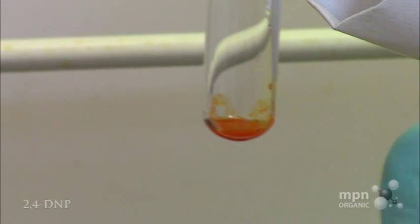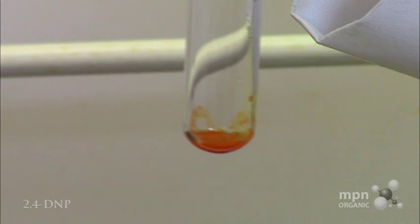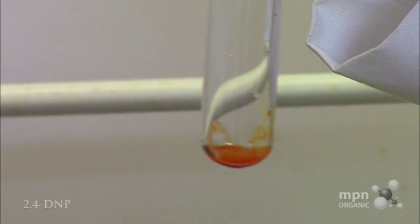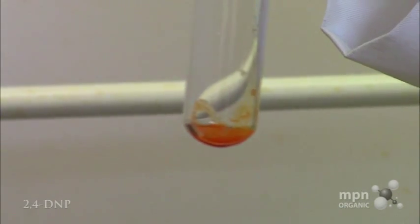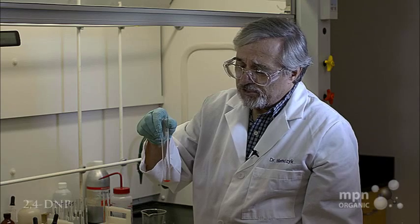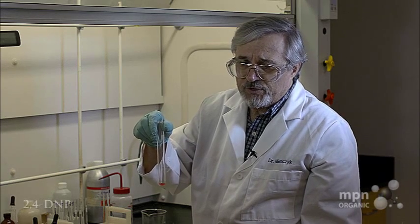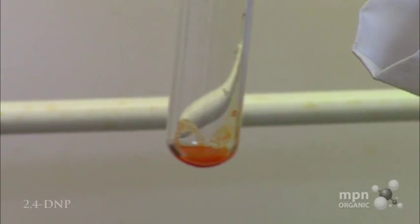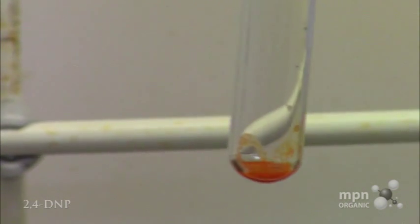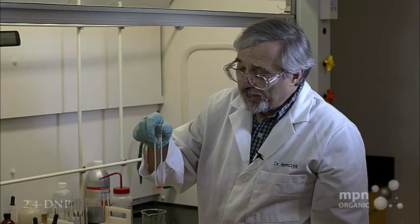Now what you would do then with this is take this material and suction filter it, then recrystallize it, and then take a melting point of it. That would be the way that you could identify this as paraanis aldehyde, because the 2,4-DNP reagent forms what we call a 2,4-dinitrophenylhydrazine derivative with the aldehyde, and that is the orange solid which you see right there.